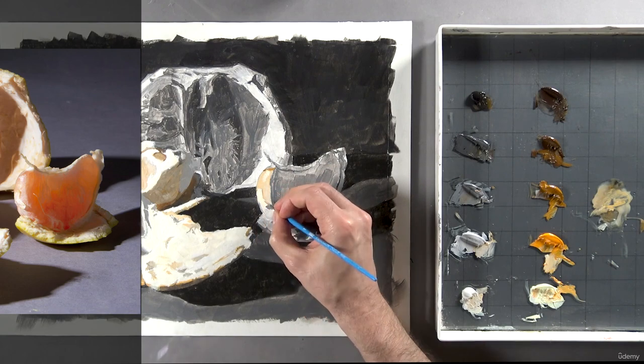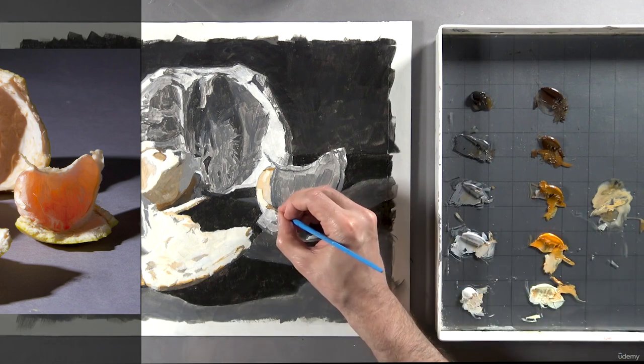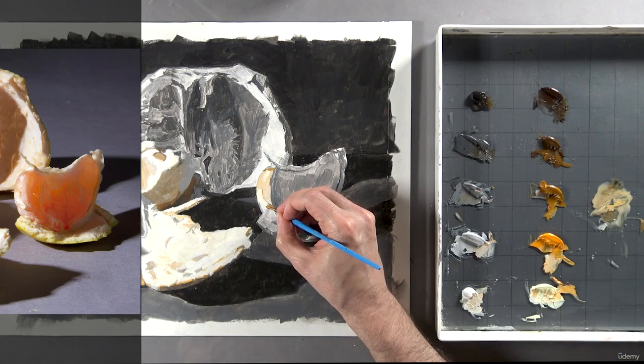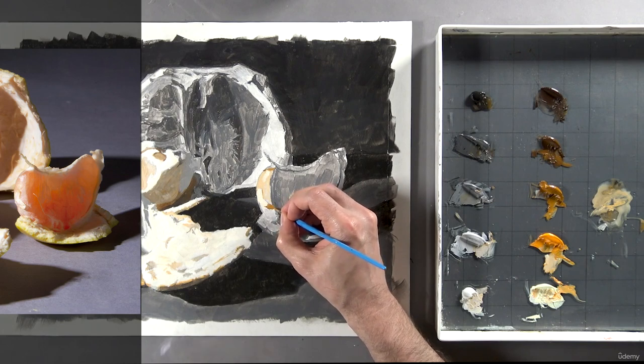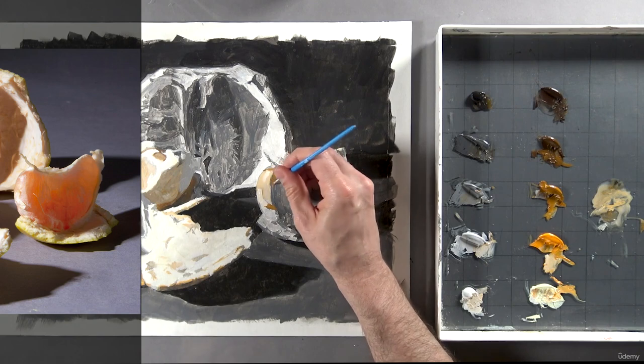Which brings us to some more color theory. In order to have that orange color look bright and vibrant, it has to have values around it that aren't bright and vibrant. Let me explain what I mean by that. Remember, all values are relative. Well, all colors are relative too.